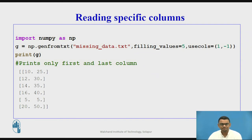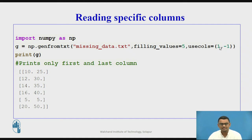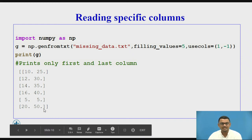You can use the usecols parameter to read specific columns from the dataset. Index 1 refers to the second column and -1 refers to the last column, since indices start from zero. We see that only the data from the two specified columns is printed when we pass the usecols parameter, and the output is generated as shown on the slide.